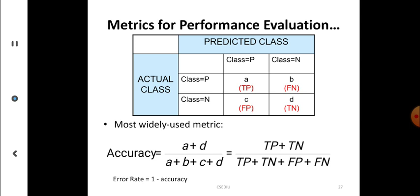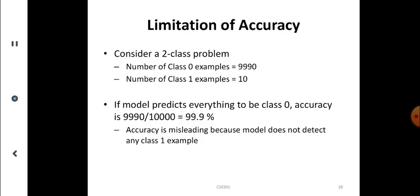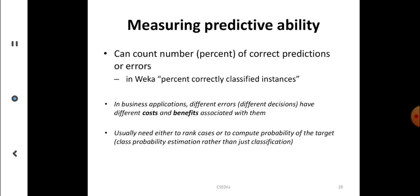From the confusion matrix we calculate accuracy: (TP + TN) / (TP + TN + FP + FN) — that is, true positives plus true negatives over the sum of all four values. Accuracy is the most widely used metric. However, there is a limitation: consider a two-class problem where 9990 examples are class zero and only 10 are class one. If the model predicts everything as class zero, accuracy is 99% — but this is misleading because the model does not detect any class one examples.